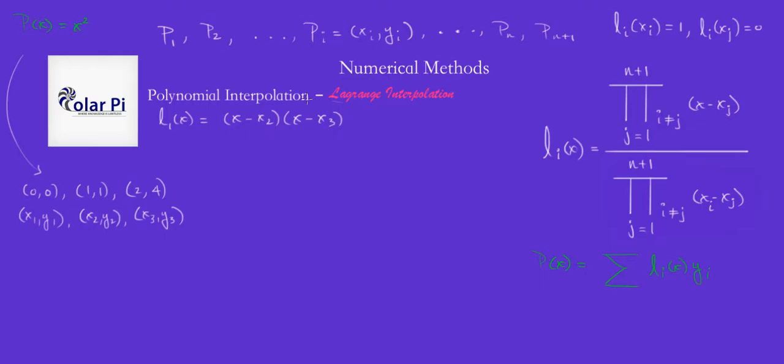So this is the numerator right here for L1, right? And the denominator is going to be X1. And I'm not going to do X1 minus X1, right? So I skip when I and J are equal, right? So I do X1 minus X2 times X1 minus X3.